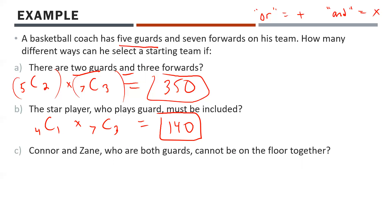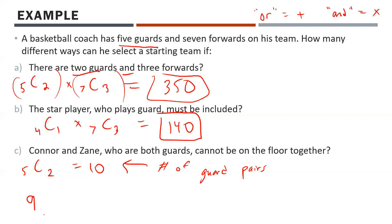Condition C: Connor and Zane, both guards, cannot be on the floor together. 5C2 equals 10 total guard pairs. One of those 10 pairs is Connor and Zane, so we subtract that, leaving 9 valid guard pairings. Then times 7C3 for the forwards, giving us 315 possible starting lineups where Connor and Zane are not chosen at the same time.